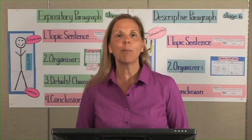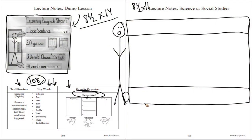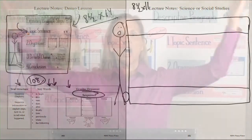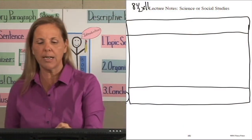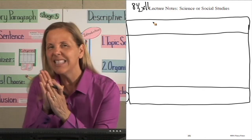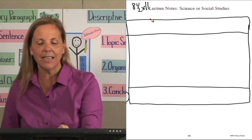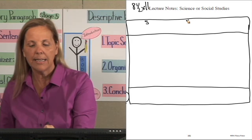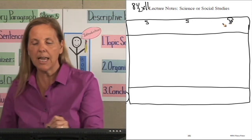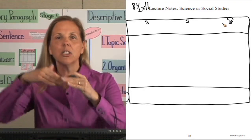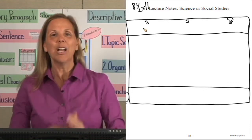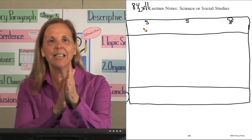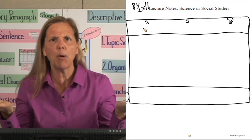Let's go to step one: topic sentence. What's the big idea about the life cycle? On my organizer, I need to make a secret formula for the topic sentence. Let's write SS lightbulb. SS lightbulb is our secret formula to make our topic sentence — the big idea, what this information is all about. Now, what does SS lightbulb mean? The first S is for setting. Let's point to our wrist like we're looking at a watch and say: setting tells us time and place.